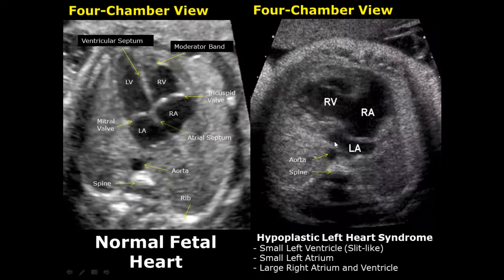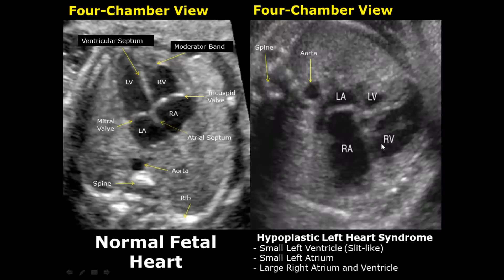In hypoplastic left heart syndrome, the left side of the heart will be smaller — we will have a small left atrium and small left ventricle — while the right atrium and ventricles will be enlarged. Here is another image of hypoplastic left heart syndrome showing small left atrium and ventricle and large right atrium and right ventricle.